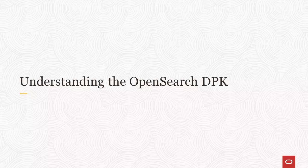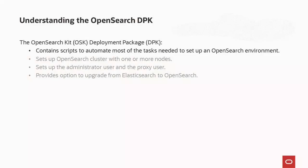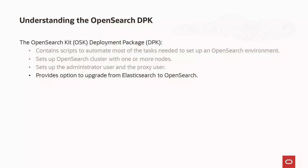Now we'll discuss the contents of the OpenSearch DPK. The OpenSearch Kit deployment package contains scripts to automate most of the tasks needed to set up an OpenSearch environment. The OSK DPK sets up an OpenSearch cluster with one or more nodes. You need to run the OSK DPK on each of the nodes to install OpenSearch and ensure that each node references the other nodes of the cluster. The OSK DPK also sets up the administrator user and the proxy user. You can use the OSK DPK to switch from Elasticsearch to OpenSearch.